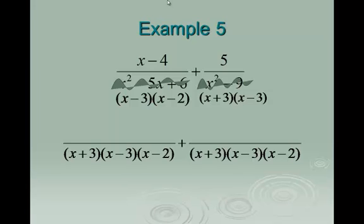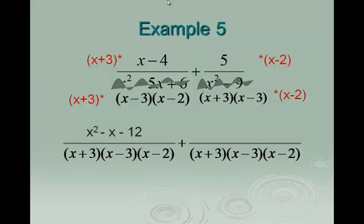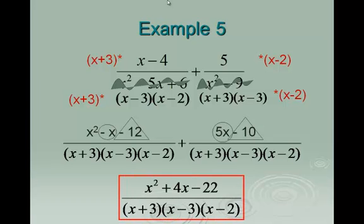Now look at the first fraction. The new factor in the common denominator that wasn't originally there is x plus 3, so I multiply the first fraction by x plus 3 and FOIL the top: x times x is x squared, x times negative 4 is negative 4x, 3 times x is 3x, 3 times negative 4 is negative 12. Combining gives x squared minus x minus 12. On the second fraction, the new factor is x minus 2. Distributing the 5 gives 5x minus 10. Combining like terms: negative x and 5x combine to 4x; negative 12 and negative 10 combine to negative 22. The final answer is x squared plus 4x minus 22 over x plus 3 times x minus 3 times x minus 2.